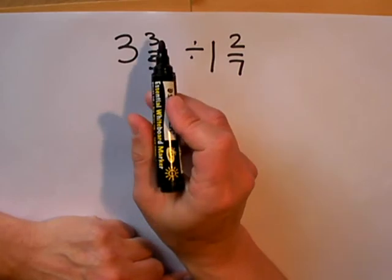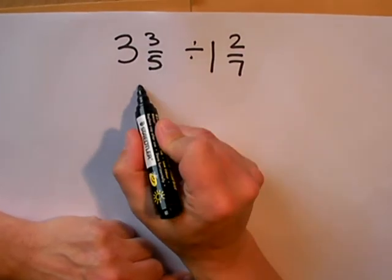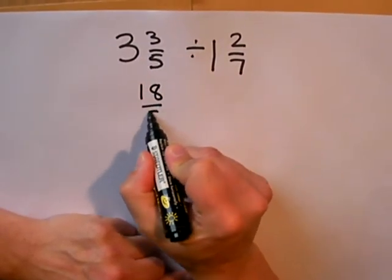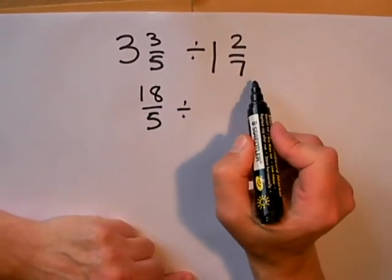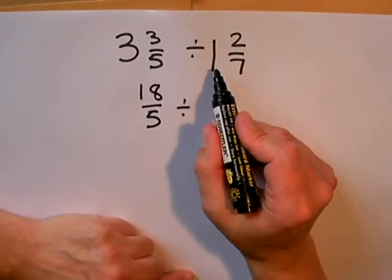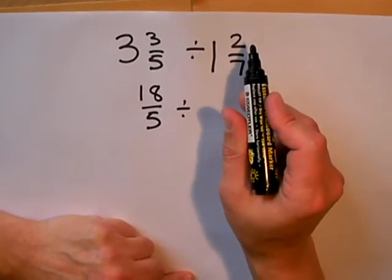I'm going to divide by 1 and 2/7. Now 1 whole one is 7/7 plus the 2 I've got already, so that gives me 9/7.